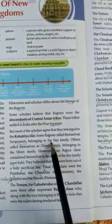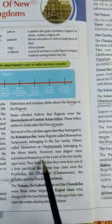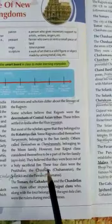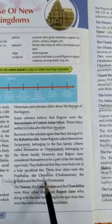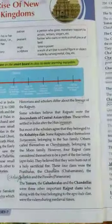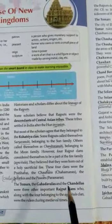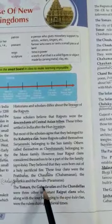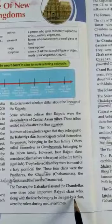Surya Vanshi means belonging to the sun family, and Chandra Vanshi means belonging to the moon family. Four Rajput clans considered themselves to be part of the fire family — the Agni Kul. These four clans were the Pratiharas, Chohans, Solankis, Chalukyas, and Paramaras. The Tomas, Gahadavalas, and Chandelas were three other important Rajput clans, who along with the four Agni Kul clans were the rulers during medieval times.